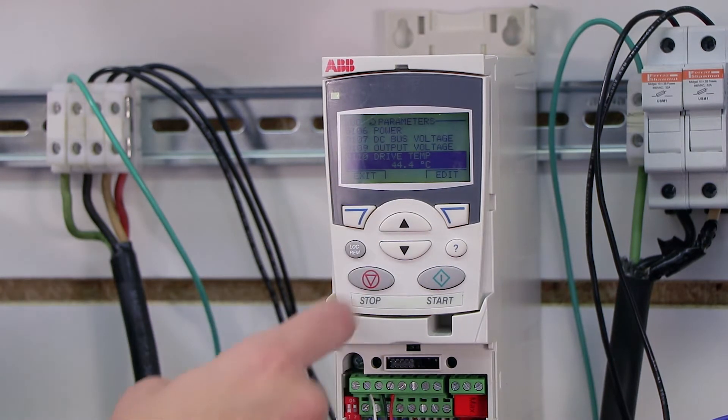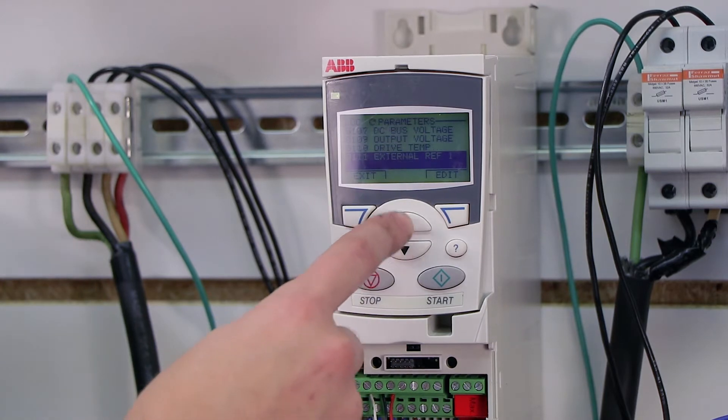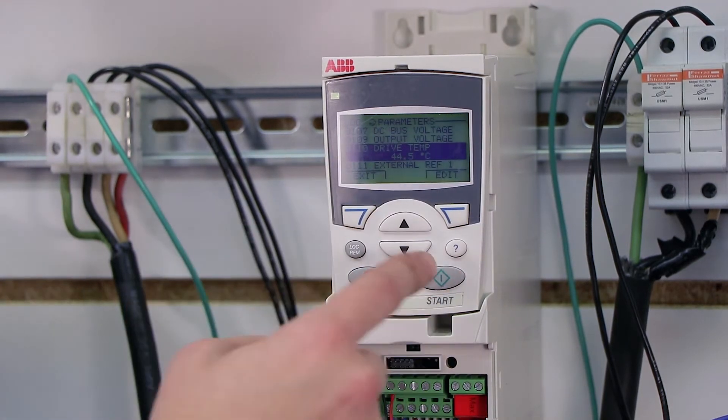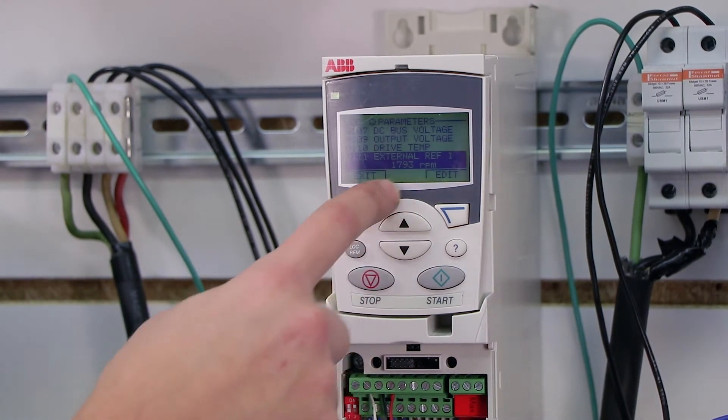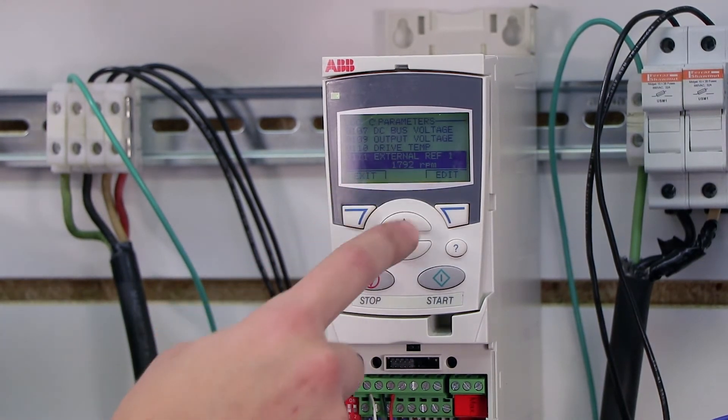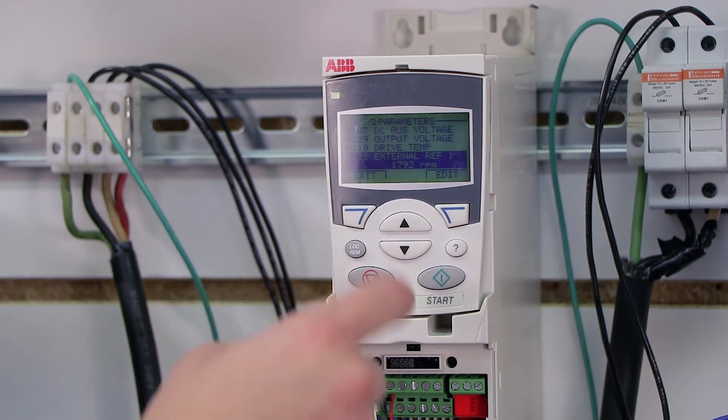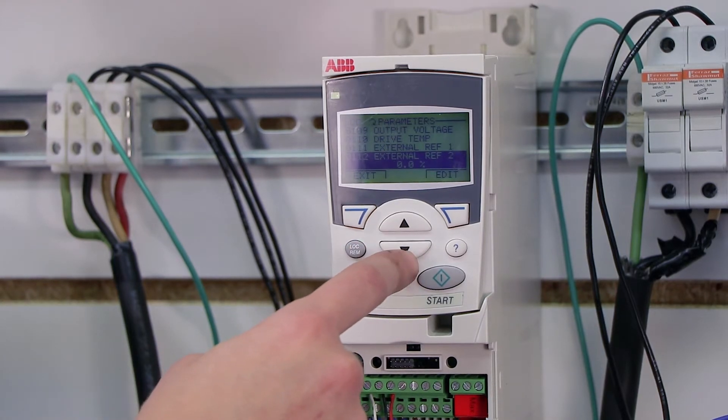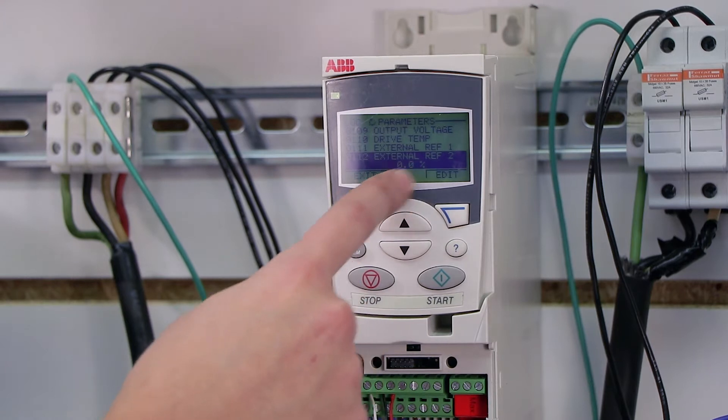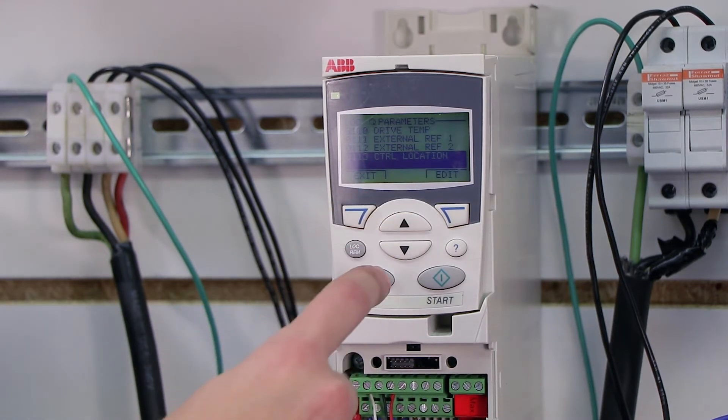My temperature is at 44.4 degrees Celsius, which as long as that's within the operating temperature of the drive, it's totally fine. My external reference, now this is an external speed reference, it's telling me what it sees. So if I have an analog input set for this, for example, it'll actually monitor whatever that digital input is. So if it's a 0 to 10 volt signal, it'll tell me what RPM that comes out to be. External reference too is if I have a second reference, which I don't.